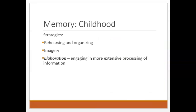Memory can be improved with the use of strategies — mental activities to improve how you process information. Rehearsing and organizing information are typical strategies used by both children and adults. Rehearsing is just repeating something multiple times, like repeating a name so that you don't forget it. Creating mental images is another strategy for improving memory. It works better for older kids and adults than for younger children, but the more you can visualize something in your mind, the easier it is to remember it, because we have better memory for images than for words or sounds.